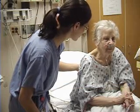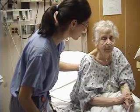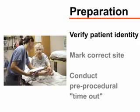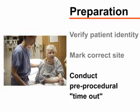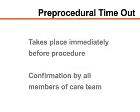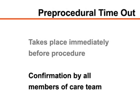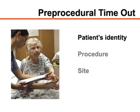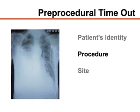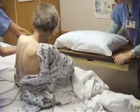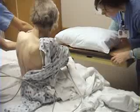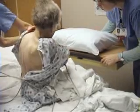Explain the procedure to the patient and obtain written informed consent. You should also verify the patient's identity, mark the correct site, and conduct a pre-procedural timeout. The timeout, which takes place immediately before the procedure is started, consists of confirmation by all members of the care team that the patient's identity, the procedure he or she is to undergo, and the site of the procedure are all correct. You will need an assistant to help position and monitor the patient and assist with the collection of pleural fluid.